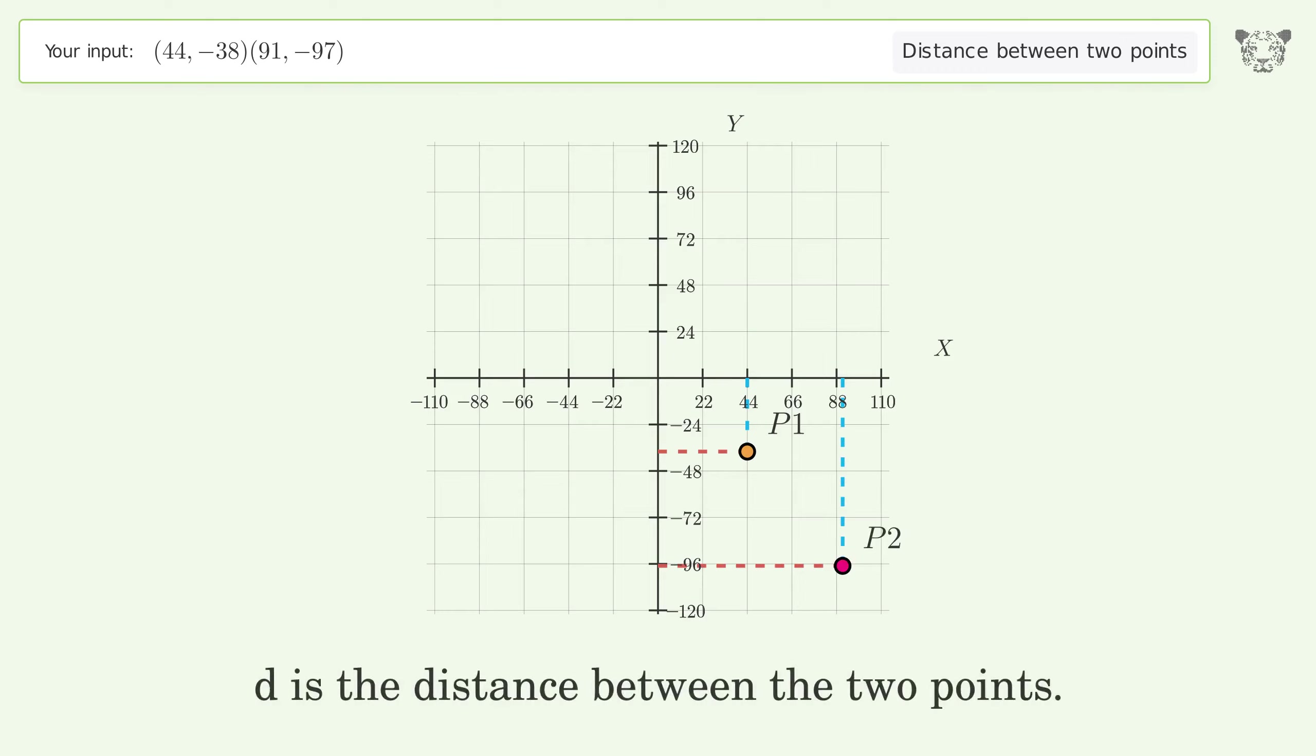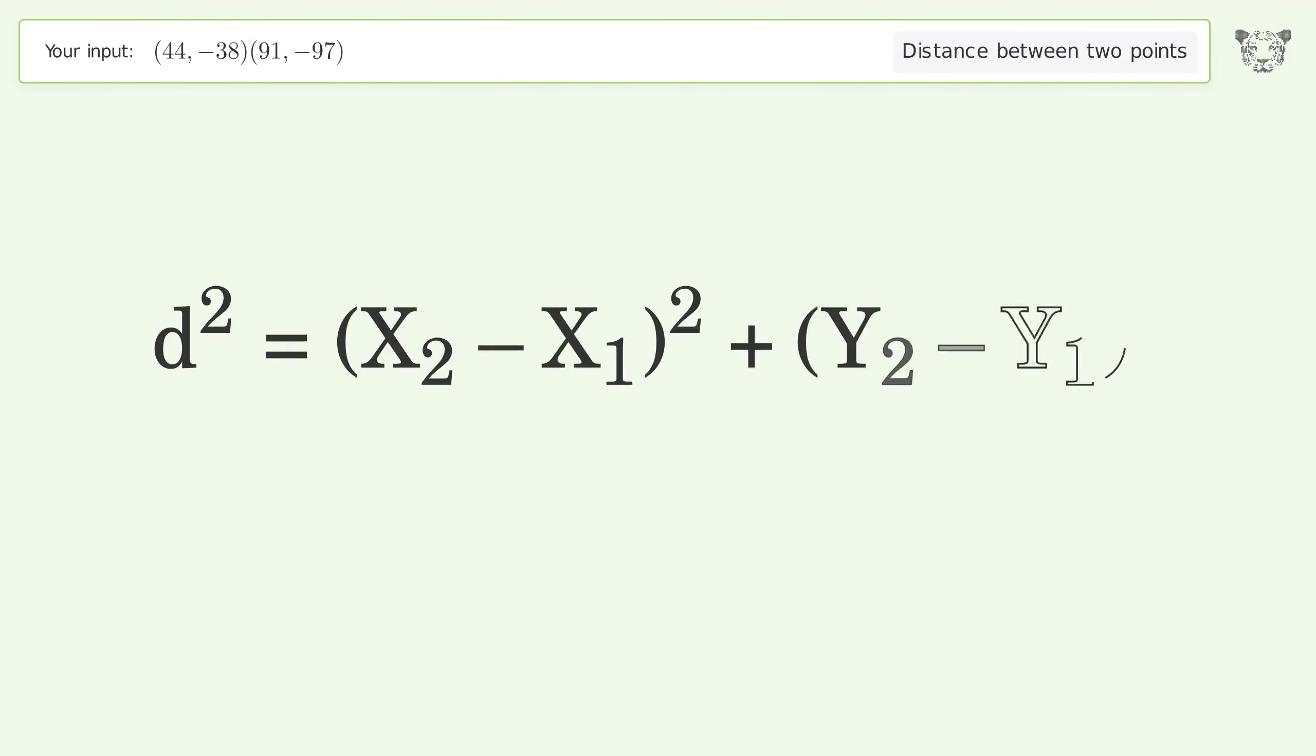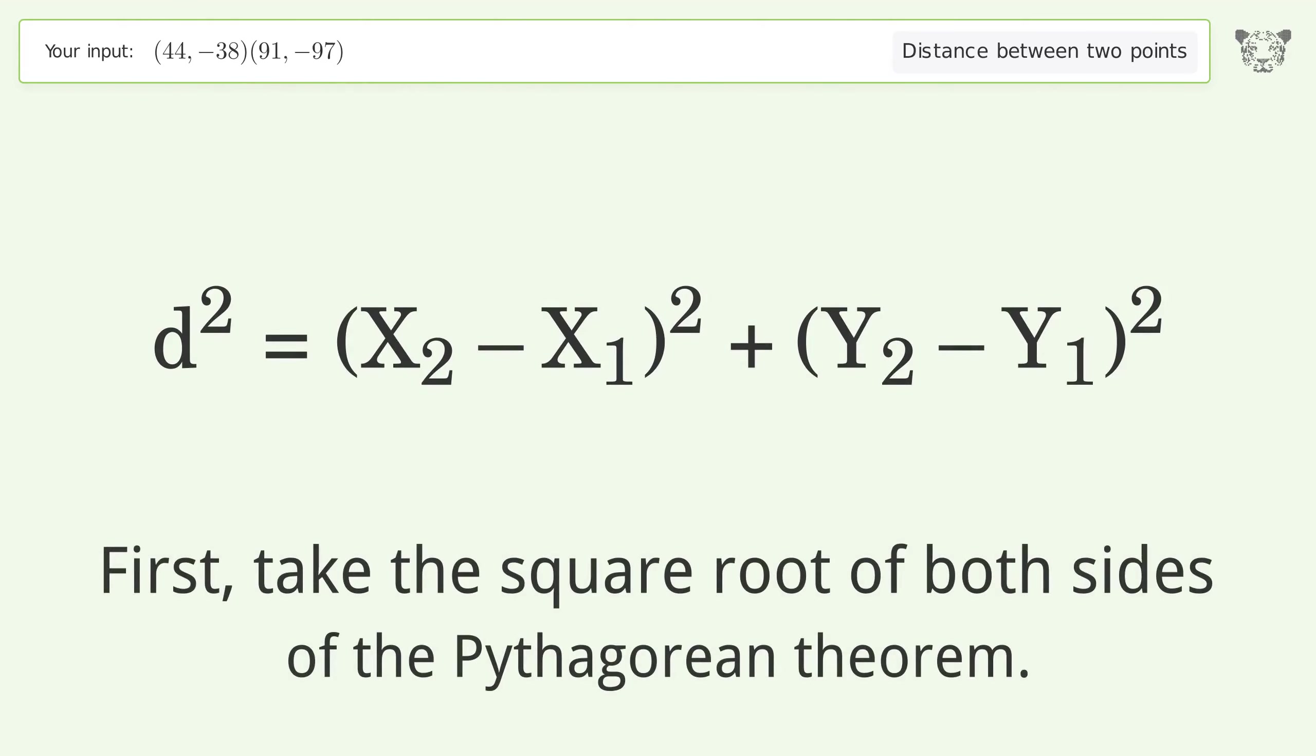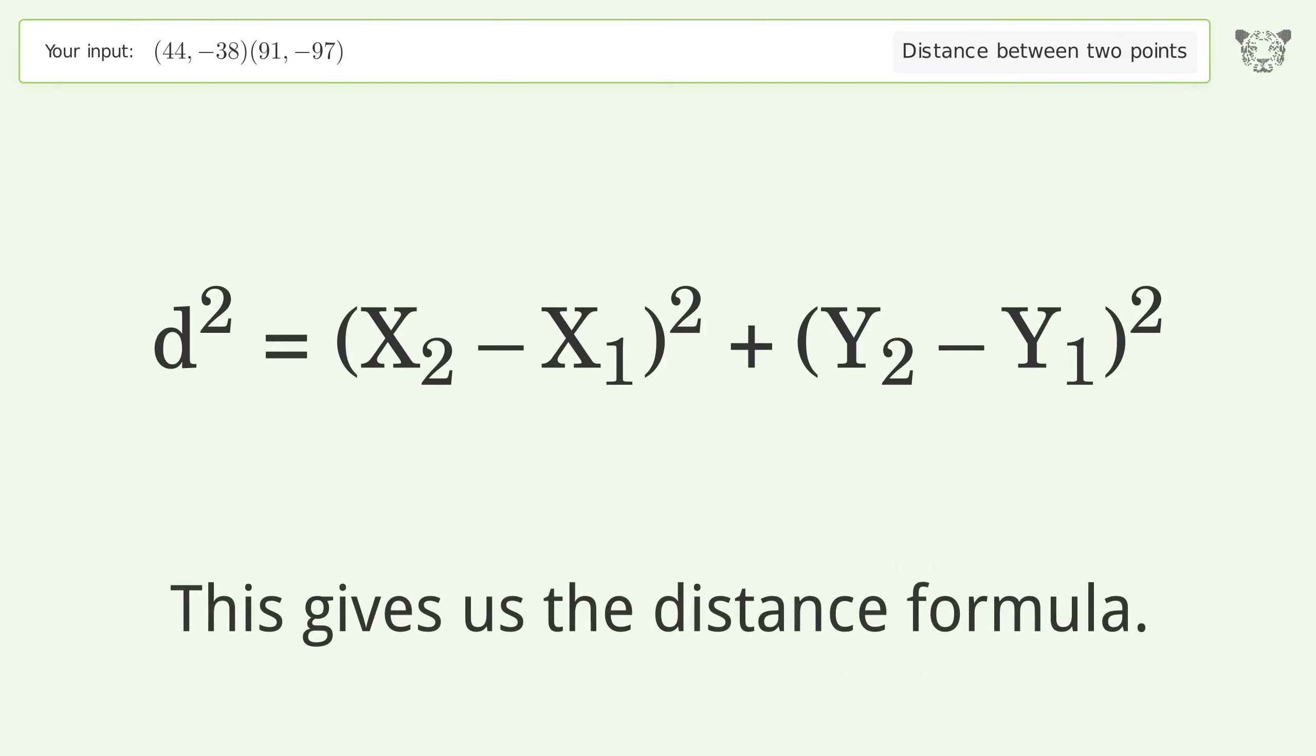d is the distance between the two points. First, take the square root of both sides of the Pythagorean theorem. This gives us the distance formula.